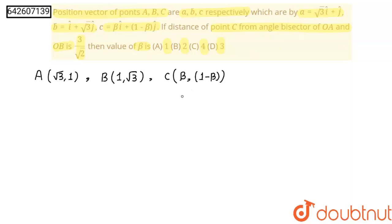No problem? Now, I am going to find angle bisector of OA and OB. Before that, I am going to draw our y-axis and our x-axis. And we can see that both the points lie in our first quadrant.